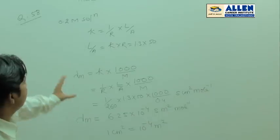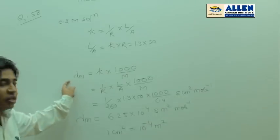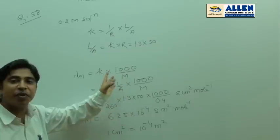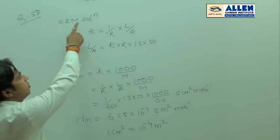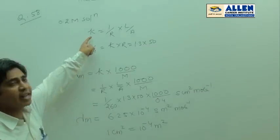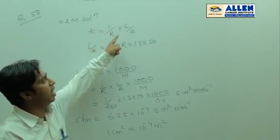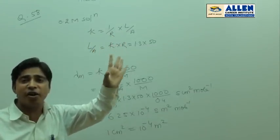We calculate the molar conductivity of the solution: specific conductance into 1000 by M. Given for 0.2 M solution, specific conductance equals 1 by R into L by A, where L by A is the cell constant.